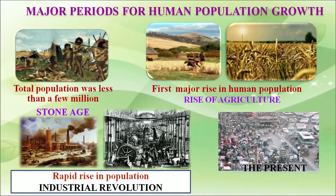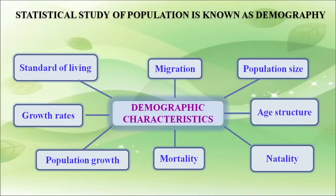Looking at population history: starting from the Stone Age, total population was less than a few million. When agriculture began, there was a first major rise in population. A rapid rise occurred when the industrial revolution started. We can now see the present situation of population growth. The next slide shows demography and its characteristics such as migration, population size, age structure, natality, mortality, population growth, growth rates, and standards of living.